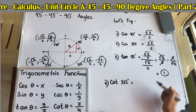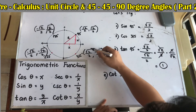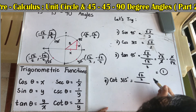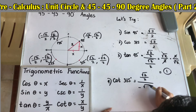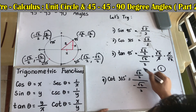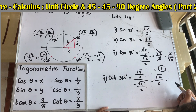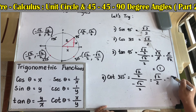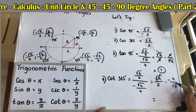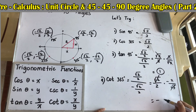Number four: cotangent 315°. Cotangent equals x over y. At 315°, x = √2/2 and y = −√2/2. So cotangent 315° = (√2/2) ÷ (−√2/2). Multiplying by the reciprocal: (√2/2) × (−2/√2). Cancelling √2 and dividing 2 by 2 gives cotangent 315° = −1.